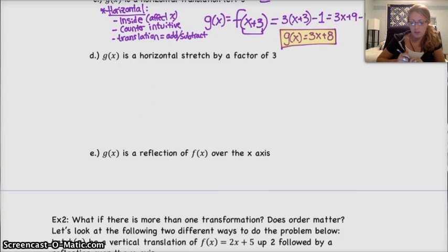Alright. D. g of x is a horizontal stretch by a factor of 3. Key words. Horizontal. Stretch. 3. Horizontal. Remember, it's inside. Counterintuitive. And since it's a stretch, you multiply or divide.